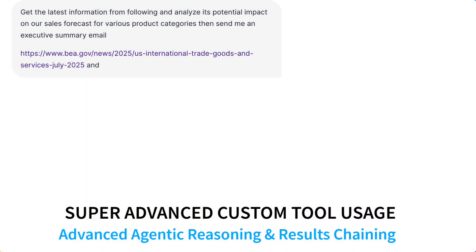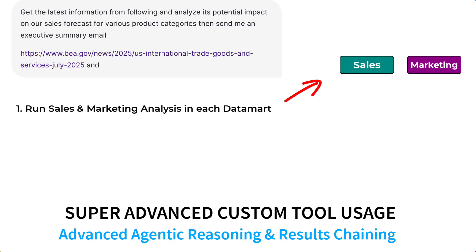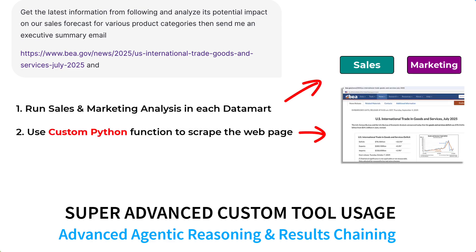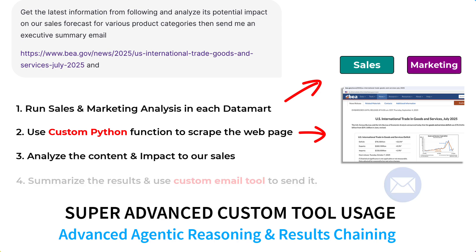For the grand finale, we're going to show you the super-advanced custom tool usage. First, Snowflake is going to run a sales and marketing product-level analysis. Next, it's going to extract a web page from a government site, correlate the content, analyze the impact on our sales, and finally send us a custom email.